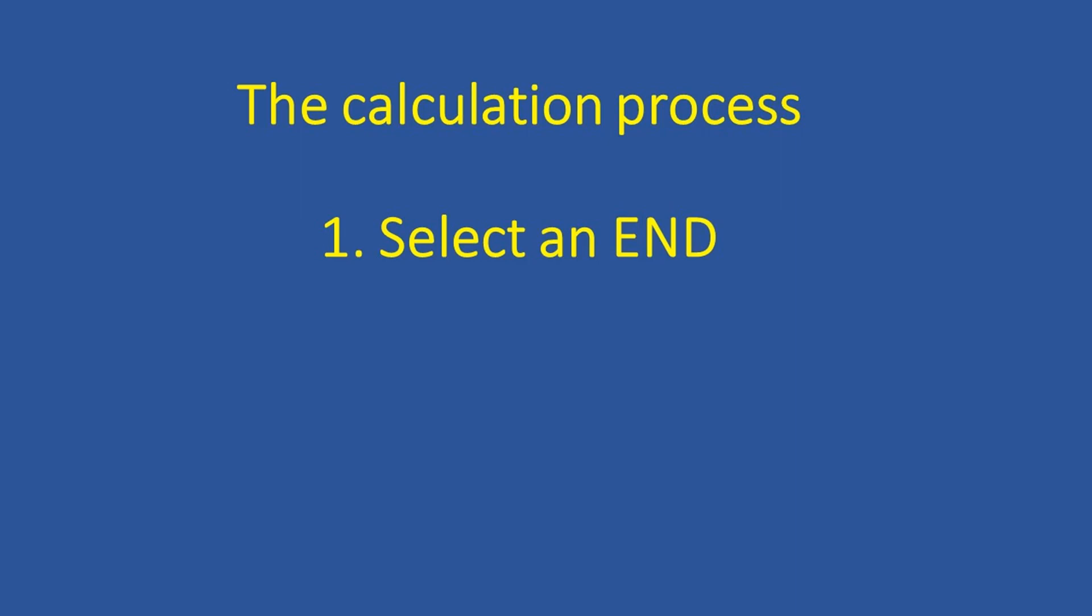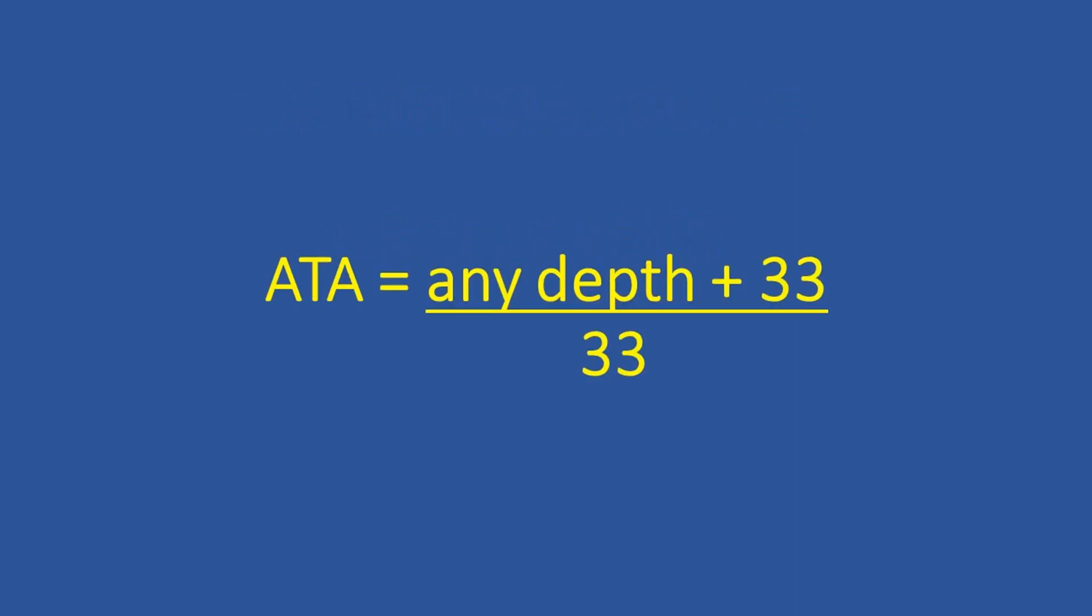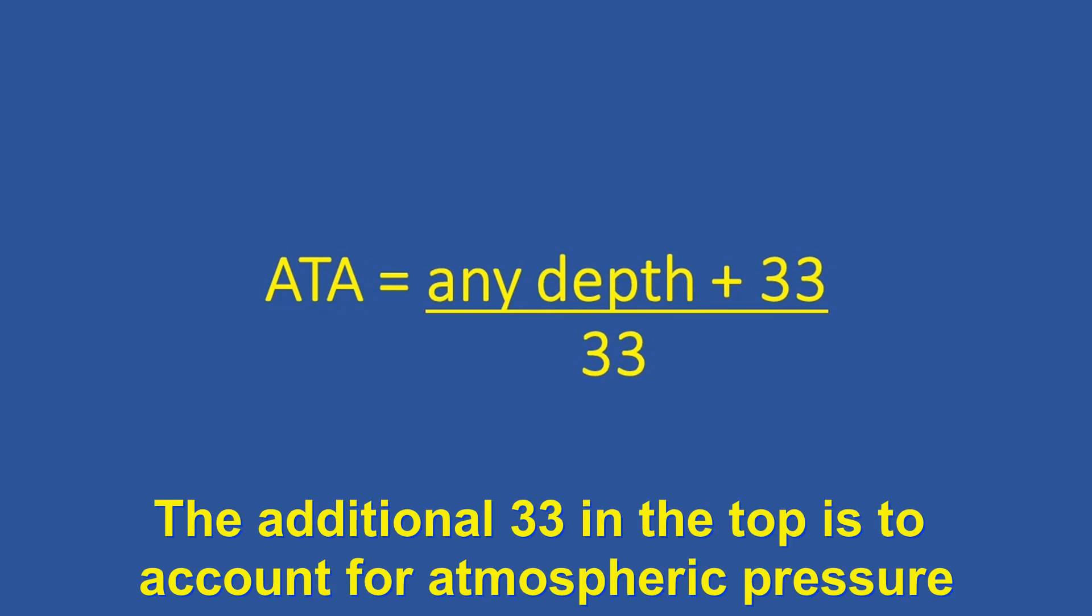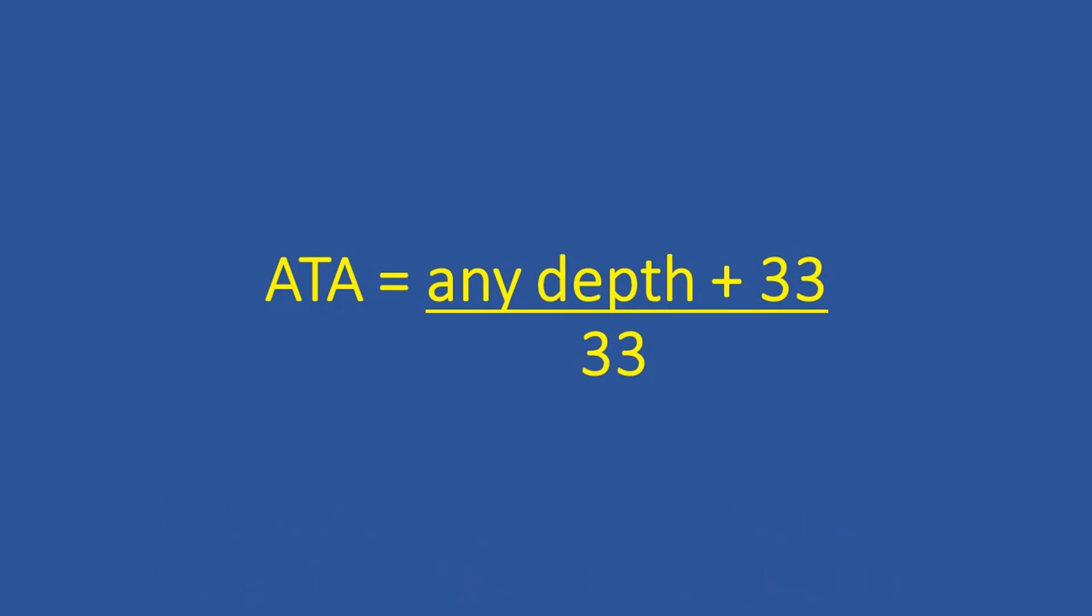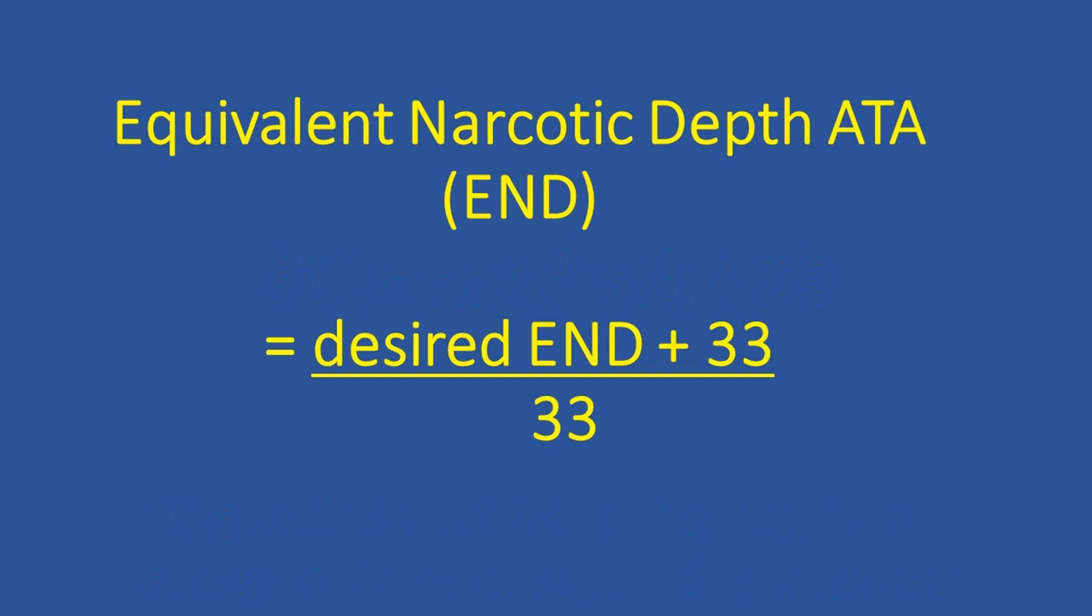Once we select an equivalent narcotic depth, we must then calculate the atmospheres absolute for that equivalent narcotic depth. You may remember from your nitrox course or an early technical diving course that to calculate the atmospheres you're going to be at for any particular depth, you take the depth, add 33 to it, and then divide by 33. So this will give you the number of atmospheres you're experiencing at any depth. The first thing we're going to use is that equation to calculate the ATAs for the equivalent narcotic depth, and this is going to be equal to the desired equivalent narcotic depth plus 33 divided by 33.